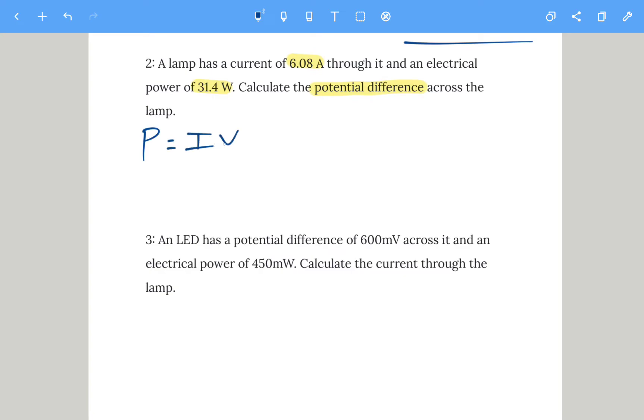To get V, make it the subject. We need to get rid of times I, so we need to move that to the other side by doing the opposite. Power divided by current will give us voltage. So power is 31.4 watts divided by 6.08 amps, and that gives a potential difference or voltage of 5.2 volts.